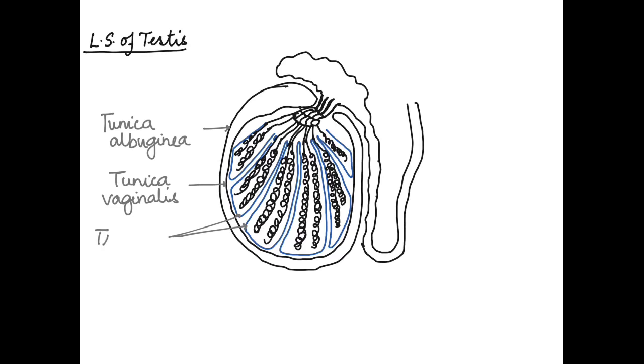Then we have the lobules inside. These are called the testicular lobules. As I said before, there are about 200 to 300 such lobules in each testis.